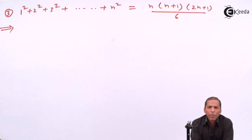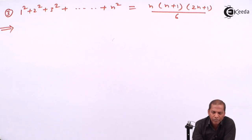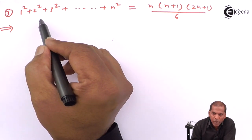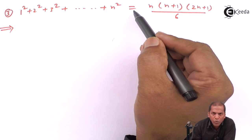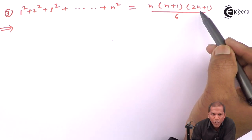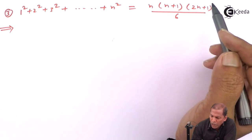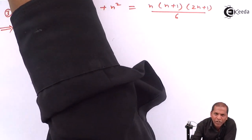Hello friends, now we see problem number 3, which is also based on the principle of mathematical induction from the chapter on method of induction and binomial theorem. The problem number 3 is: 1 square plus 2 square plus 3 square plus dot dot plus n square, and we have to prove that this equals n(n+1)(2n+1) divided by 6, and this result is true for all n belonging to the set of natural numbers.